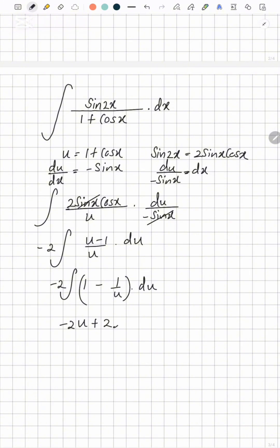minus 1 over u is ln u. It becomes plus because we have minus 2 at the front. So your final answer is going to be minus 2 into 1 plus cos x, plus 2 into ln of 1 plus cos x, plus c. This is the answer.